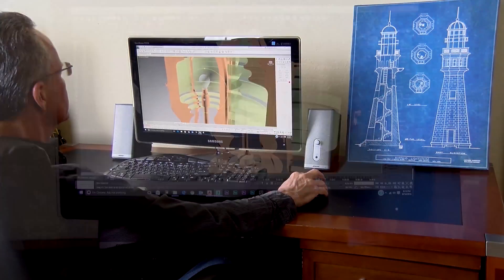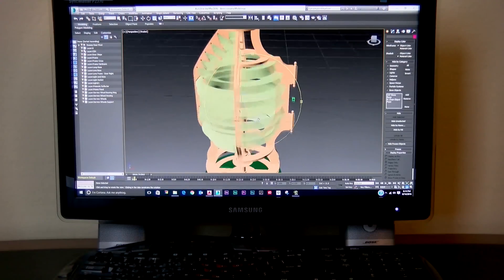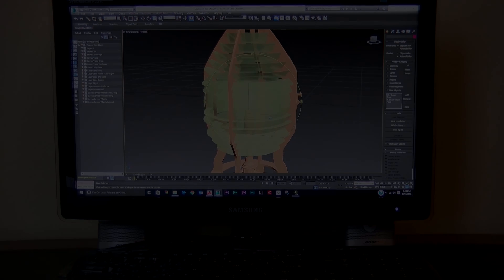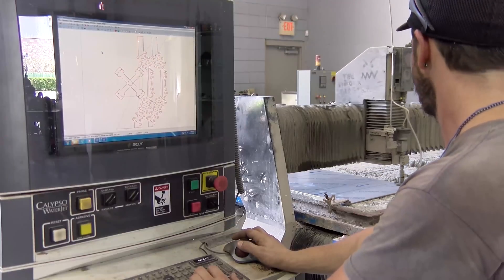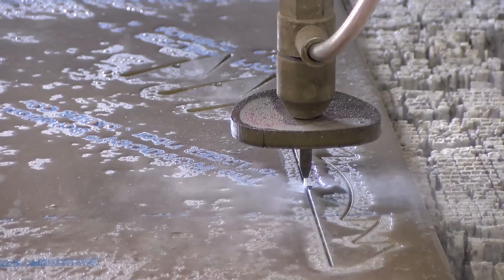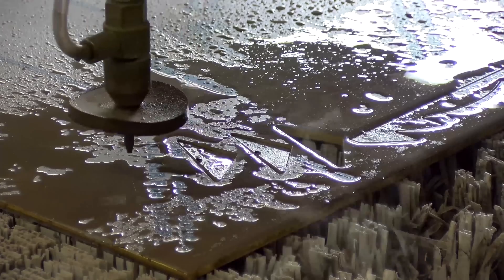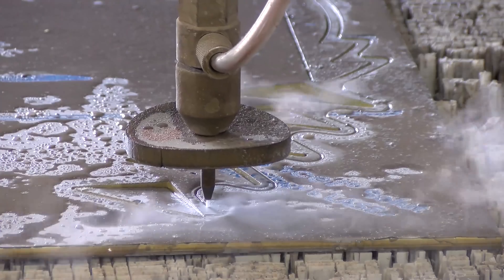The current design of the Fresnel lens is accomplished with the use of 3D computer programs. The computer models are used to create patterns to cut the brass frame by the use of a water jet process. The water jet cutter pierces through the brass with a high-pressure stream of water and abrasives.